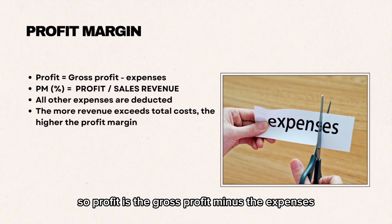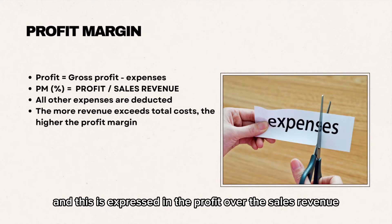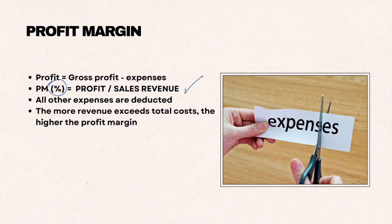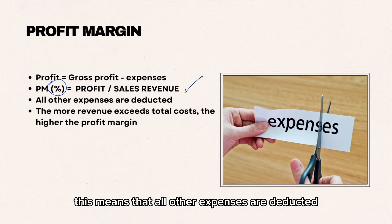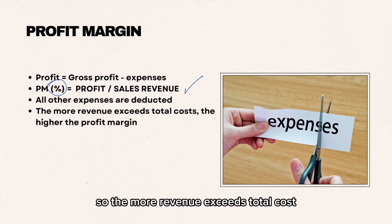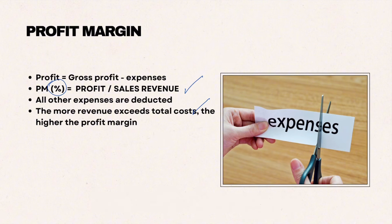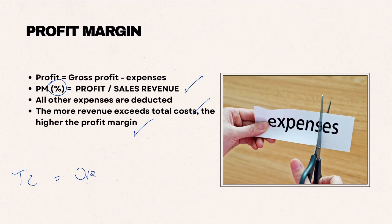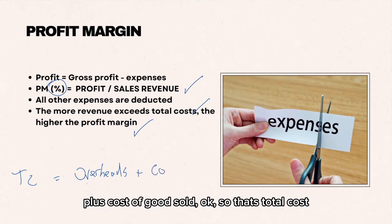Moving on to profit margins. Profit is the gross profit minus the expenses, and this is expressed as profit over sales revenue, which is also calculated as a percentage. This means that all other expenses are deducted. So the more revenue exceeds total cost, the higher the profit margin. Total cost equals overheads plus cost of goods sold.